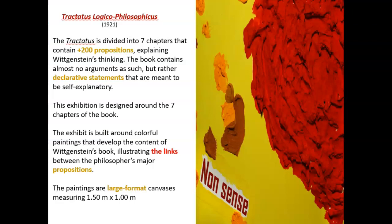The Tractatus Logico-Philosophicus, or for short the Tractatus, is divided into seven chapters that contain more or less 200 propositions. The propositions explain Wittgenstein's thinking. The book contains almost no arguments as such, but rather declarative statements that are meant to be self-explanatory. Our exhibition is designed around the seven chapters of the book, with colorful paintings that illustrate the links between the philosopher's major propositions.